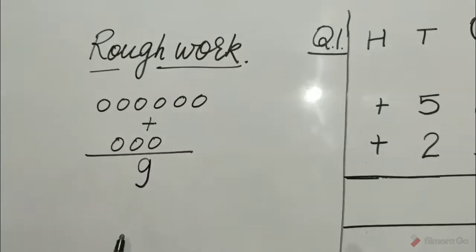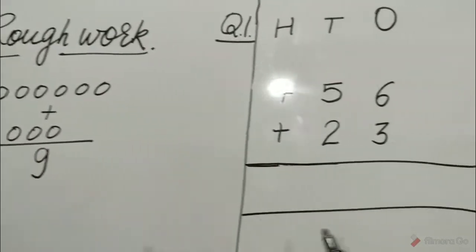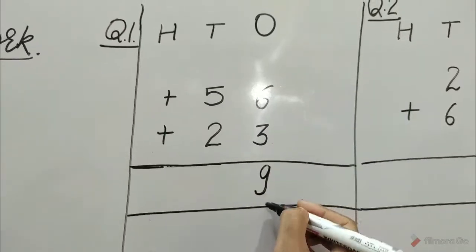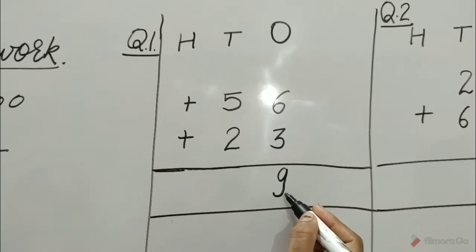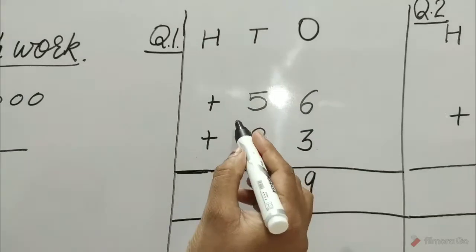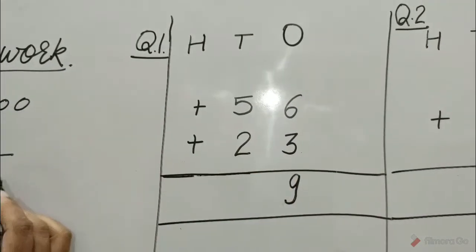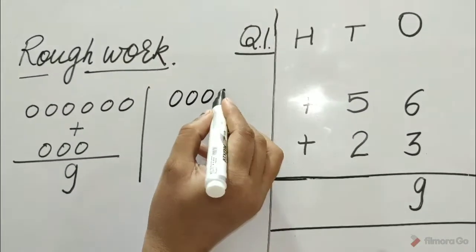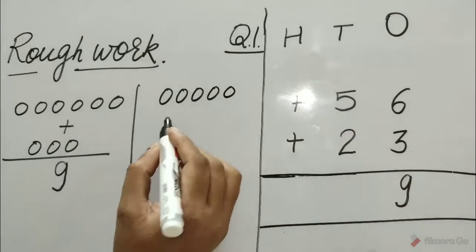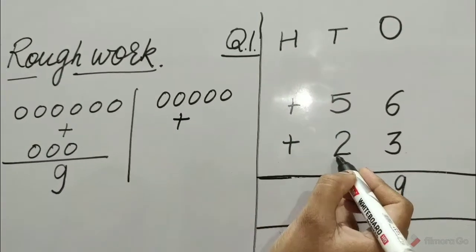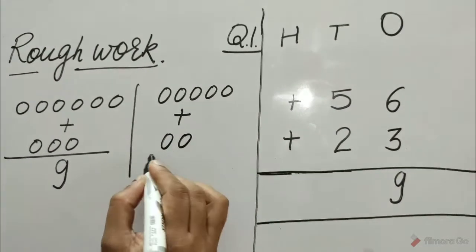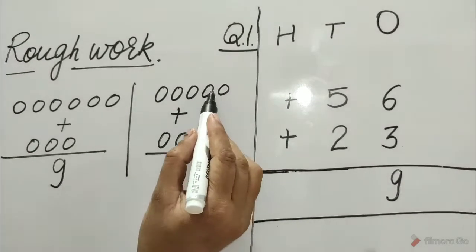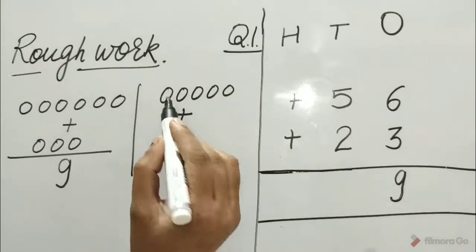Total number of circles are 9. Write 9 in ones, and after that we add tens. Draw 5 circles for 5 tens and 2 circles for 2 tens. Now count all together: 1, 2, 3, 4, 5, 6, 7.